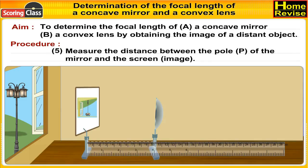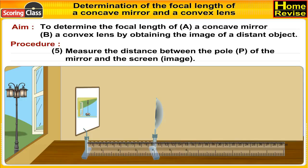Measure the distance between the pole P of the mirror and the screen, that is the image. Repeat the procedure by selecting two more distant objects like a tree, a house, or a telephone pole.